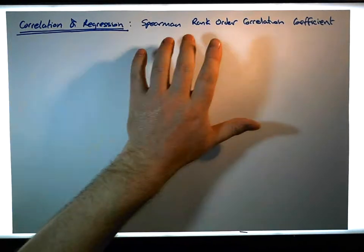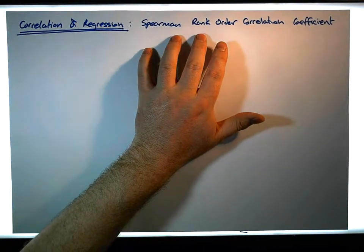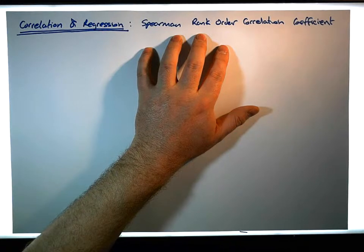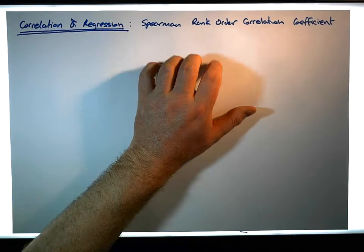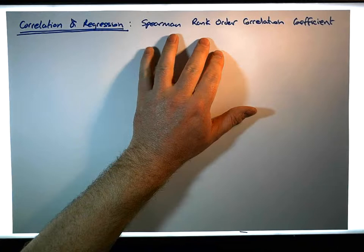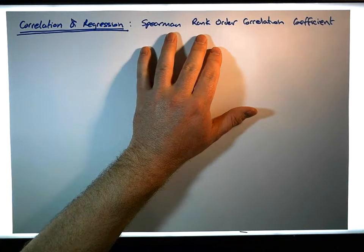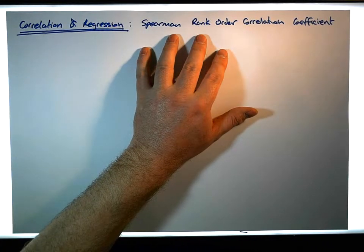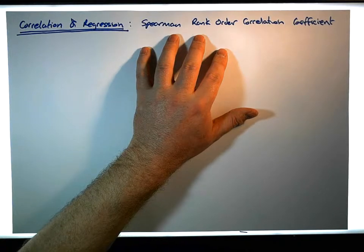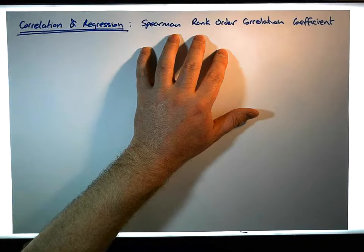Probably the main assumption we violate is the assumption of bivariate normality. We're also in the situation where one or two of our variables aren't measured at an interval or ratio level of measurement, and instead are measured at the ordinal level of measurement.